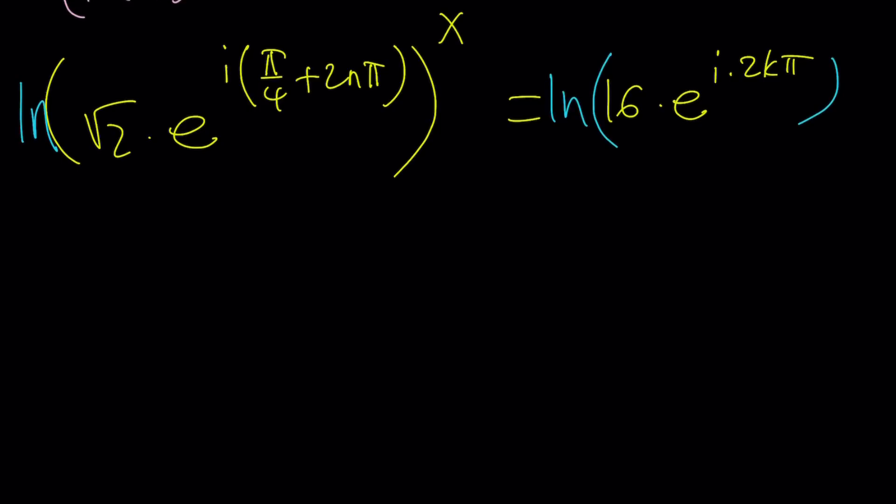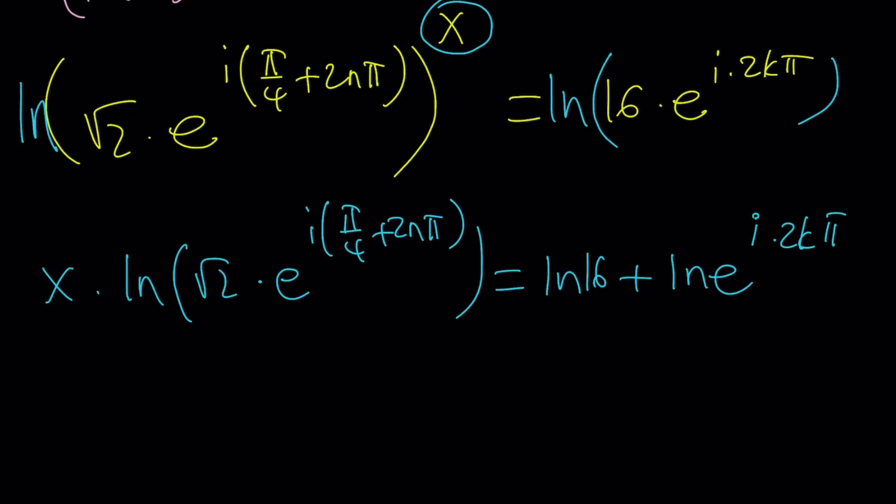Natural log both sides. This is going to give us the following. X is going to come to the front: X times ln(√2 · e^(i(π/4 + 2nπ))). And we can separate these into two pieces.